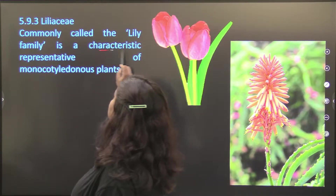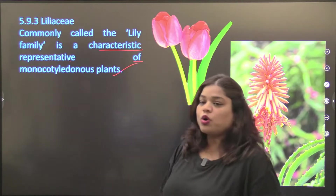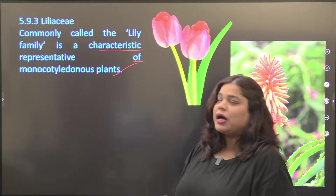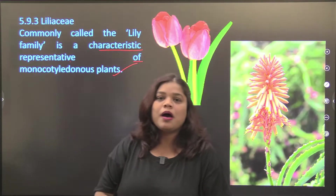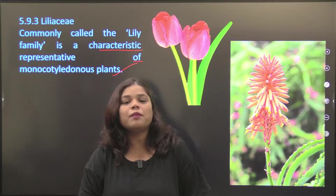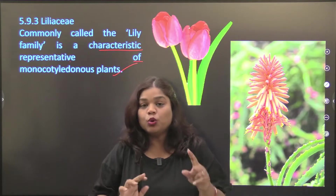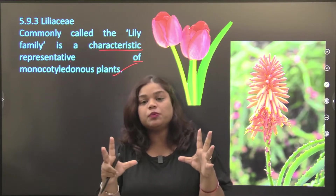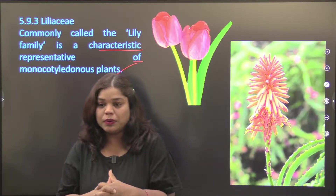Liliaceae is commonly called the lily family and is a characteristic representative of monocotyledonous plants — monocots. Features include parallel venation. In monocots, cotyledons: one cotyledon will be small, and the major portion will be your endosperm.